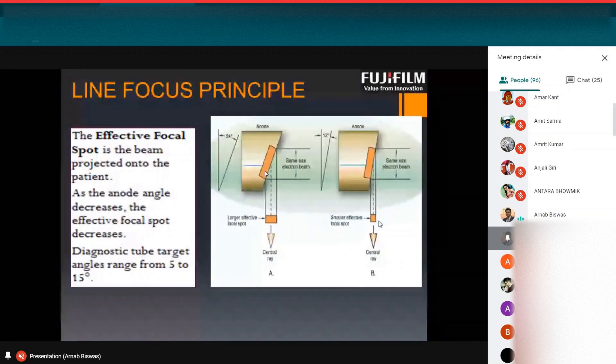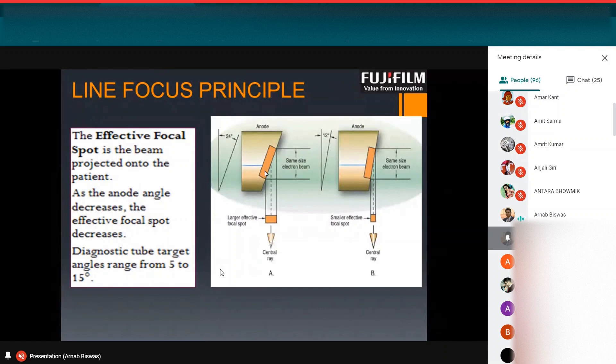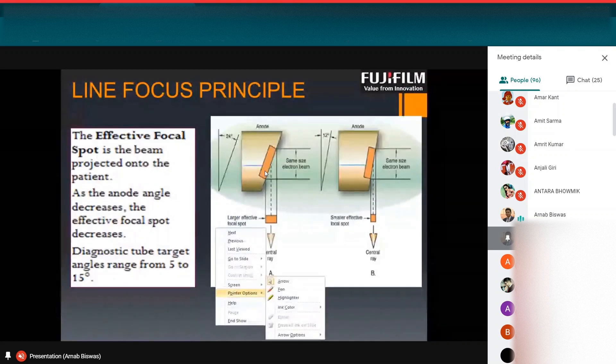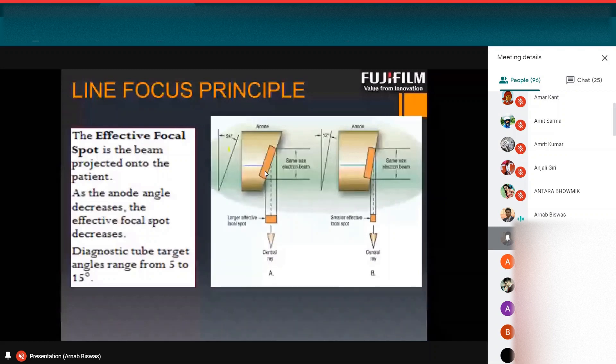I would like to discuss about the line focus principle. The effective focus spot is the beam projected onto the patient. As the anode angle decreases, the effective focus spot decreases. In this image, this is A and this is image B. In image A, you can see we use 24 degree anode angle. And in image B, you can see we use 12 degree anode angle. The electron beam size is same in both the images. But due to the difference of this anode angle, the effective focus spot is changed.